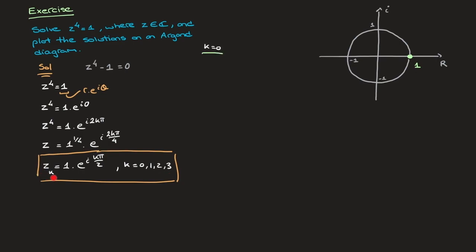When k equals 0, this expression becomes z sub 0, which equals 1 times e to the i·0. Since e to the i·0 equals 1, the first zero is z sub 0 equals 1. I'll plot and label that on the Argand diagram. The argument of z sub 0 is theta sub 0 equals 0 degrees.